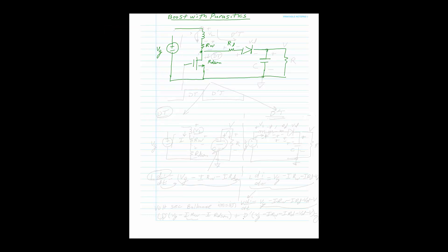Direction of current flow always starts from the generator. When the switch is on — during DT — current flows through the inductor, giving plus-minus polarity across L, across the winding resistance, and across R_DS(on). During D'T, the switch is open; current flows through the diode, producing plus-minus across the diode and the output voltage.